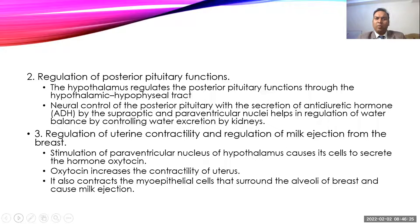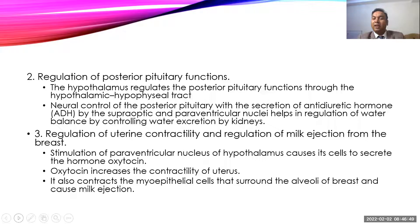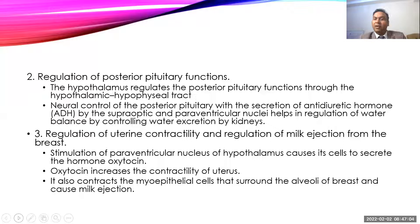The hypothalamus also regulates the posterior pituitary through the hypothalamohypophyseal tract. The supraoptic nucleus and part of the paraventricular nucleus release ADH (antidiuretic hormone) directly, regulating water and electrolytes in the body. The paraventricular nucleus also releases oxytocin, which stimulates contraction of uterine smooth muscles — helping in parturition — and acts on myoepithelial cells surrounding breast alveoli to cause milk ejection.